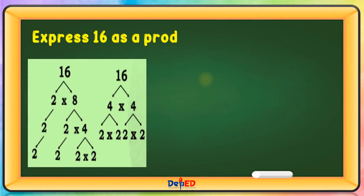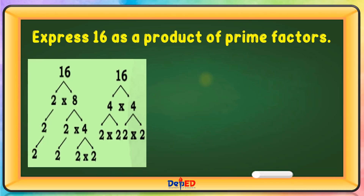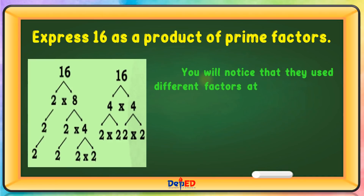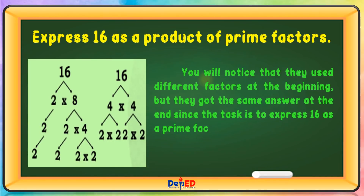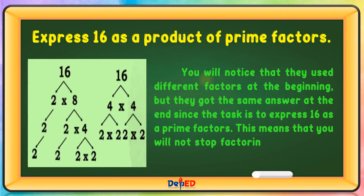Express 16 as a product of prime factors. You will notice that they used different factors at the beginning, but they got the same answer at the end, since the task is to express 16 as prime factors. This means that you will not stop factoring until you get the prime factors.